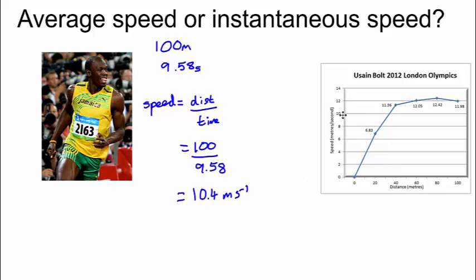So we can see here that although Usain Bolt's average speed was 10.4 metres per second, his actual speed — his instantaneous speed at any given point along the race — was different. At the beginning of the race his instantaneous speed is zero because he hasn't set off yet. For the first nearly 40 metres, Usain Bolt is accelerating. He reaches a maximum speed at around 80 metres and then very slightly slows down as he approaches the finish line.